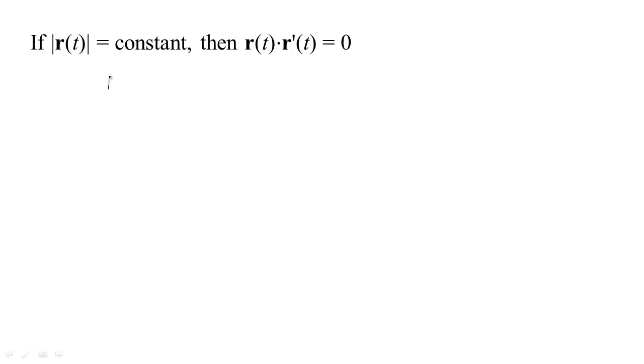Well, remember that you can find the length of a vector. If you dot a vector with itself, that gives you the length of the vector squared, right? So if that's equal to a constant,